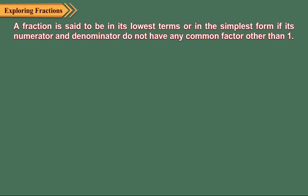A fraction is said to be in its lowest terms or in the simplest form if its numerator and denominator do not have any common factor other than one. Consider the fraction eight upon fifteen. All the factors of eight are one, two, four, eight.